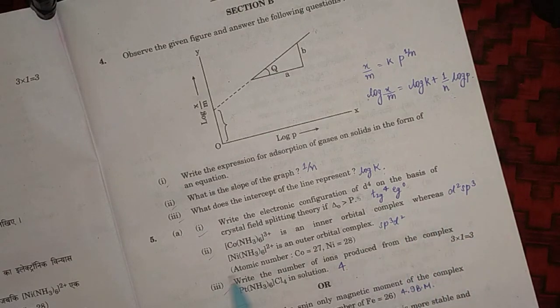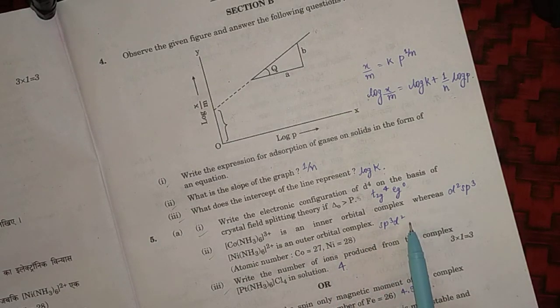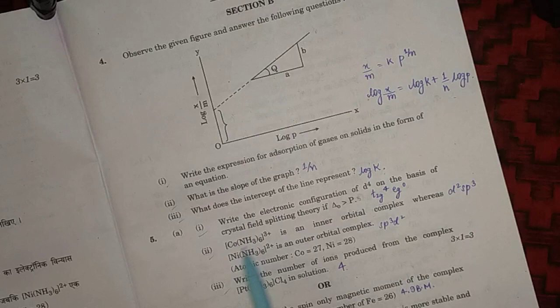Yes, because it forms d2sp3 hybridization and Ni(NH3)6 2+ is an outer orbital complex because it forms sp3d2 configuration. Also here, Co has +3 charge so NH3 will be a strong field ligand, but Ni has +2 charge and here NH3 will act as a weak field ligand.